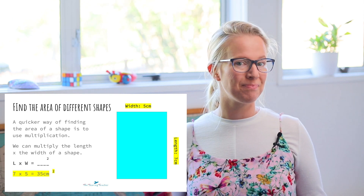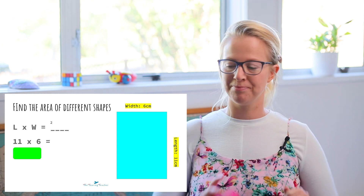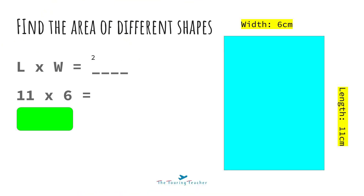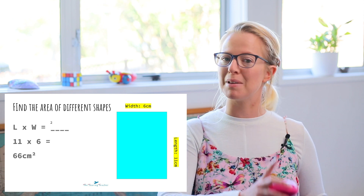Should we try another one? Alright, let's look at the length and the width for this one. The length is 11 centimetres and the width is 6 centimetres. So we're going to be using our 11 times tables or your 6 times tables. So length times width — 11 times 6, which is 66. The area of this rectangle is 66 centimetres squared.